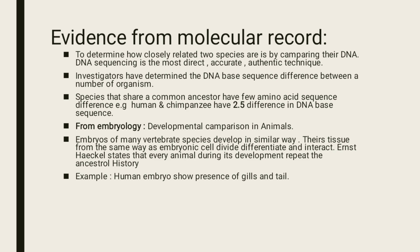Evidence from embryology involves developmental comparison in animals. The embryos of many vertebrate species develop in a similar way, with tissues forming as embryonic cells divide, differentiate, and interact. Ernst Haeckel stated that every animal during its development repeats its ancestral history. For example, human embryos show the presence of gills and tails during development.